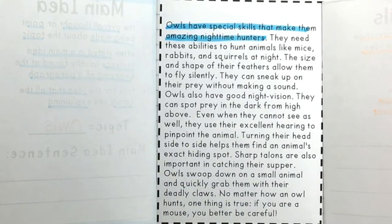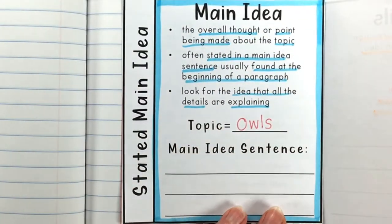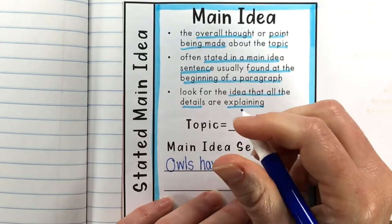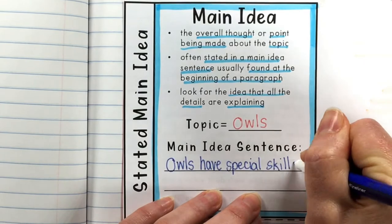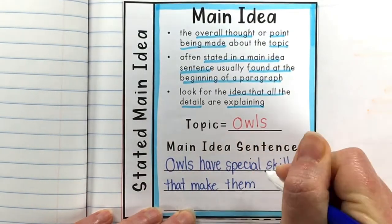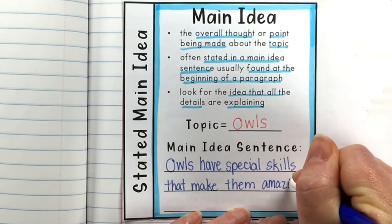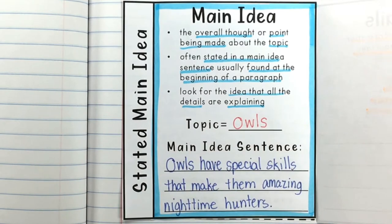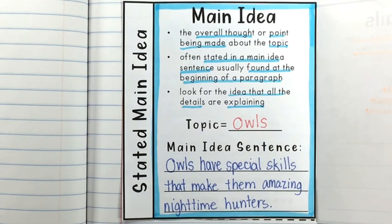I'm going to flip back to the front and write that main idea sentence down. You can pause the video if you need to, but I'm going to go ahead and write it now: 'Owls have special skills that make them amazing nighttime hunters.' I want you to think about how that helps us better understand this passage — now that we know the overall thought, we can see the relationship between all of these details and know why it's important to understand the main idea. It really just helps us understand what we're reading better.